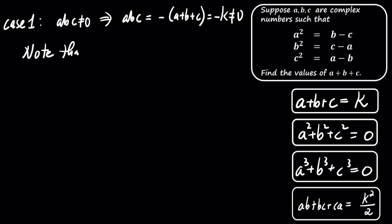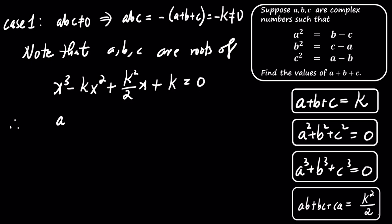In case 1, we assume that the product of A, B, and C is not 0. This implies that A times B times C equals negative k. We also observe that A, B, and C are roots of the polynomial given by x cubed minus k times x squared plus k squared over 2 times x plus k equals 0. By substituting A, B, and C into this polynomial, we get...